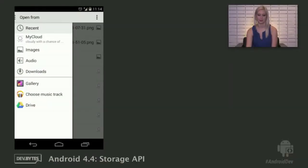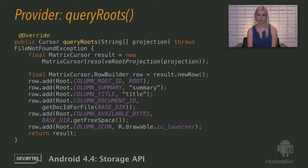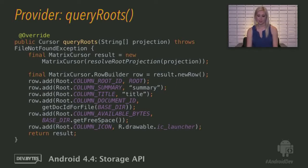Here's an example of what happens when the provider first queries the roots of all document providers. The projection you see as an argument just represents the specific fields the caller wants to get back. ResolveRootProjection is a method that returns either those fields or the full projection if the caller passed in null. Here we're creating a new cursor and adding one row to it — one root, a top-level directory like Gallery or Drive. Most applications will have one root; you might have more than one in the case of multiple user accounts, in which case just add a second row to the cursor. What's important is that every file, including directories, has exactly one unique ID. Other apps might hold on to this ID, and it's an explicit part of the contract that it won't change.